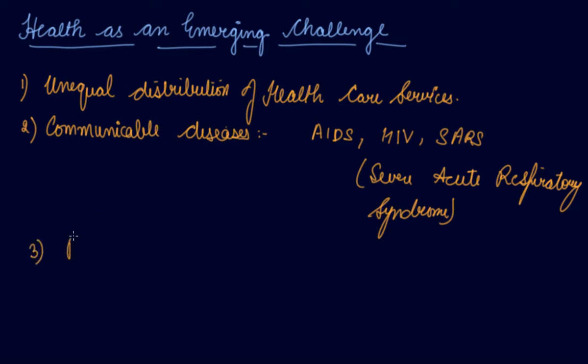Third: Poor management. There is a mismatch between the personnel for healthcare and the number of healthcare centers. The number of healthcare centers is more, whereas the number of doctors and caregivers is comparatively less. In rural areas, there might be only one clinic, but you won't find X-ray machines, MRI machines, or ultrasound machines. For those, people have to come to urban areas.